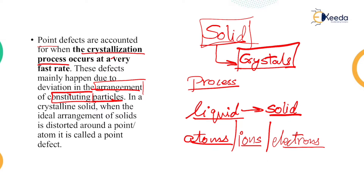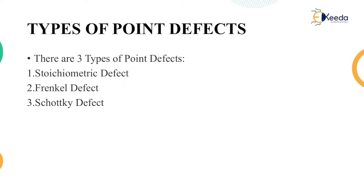In crystalline solids, when the ideal arrangement of solids is distorted around a point or atom, it is known as a point defect. If you have one particular solid — let's take a cube — and you have one particular point where some kind of distortion is happening, it is known as a point defect. There are three kinds of point defects, and most of them are very interrelated to each other.